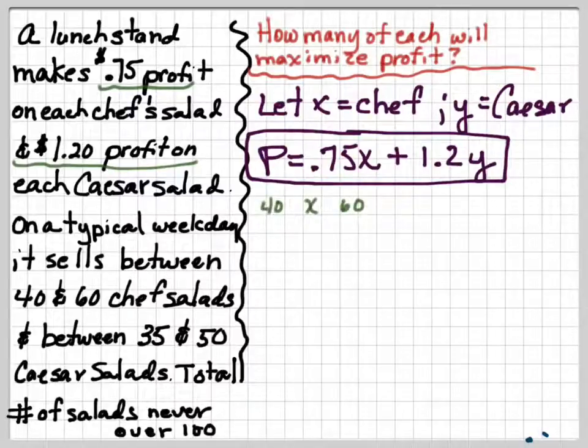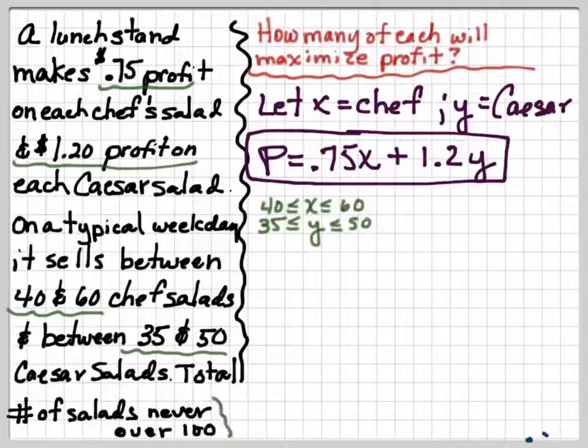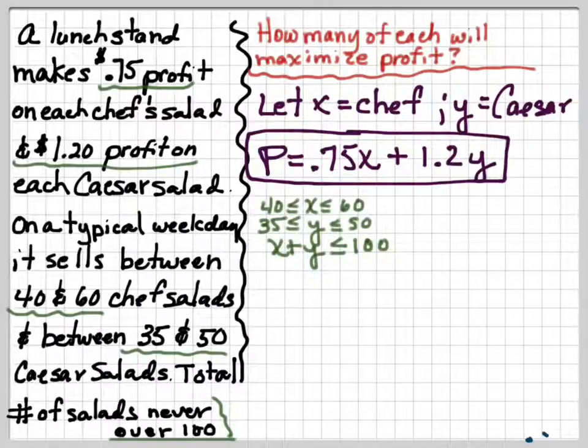Next, I know that x, which is my chef's salads, run between 40 and 60 on a typical weekday. And so I can write that as a compound inequality where x lies between 40 and 60. And I know that my Caesar salads will lie between 35 and 50. And the third thing I know is the sum of the two types of salads do not exceed 100.